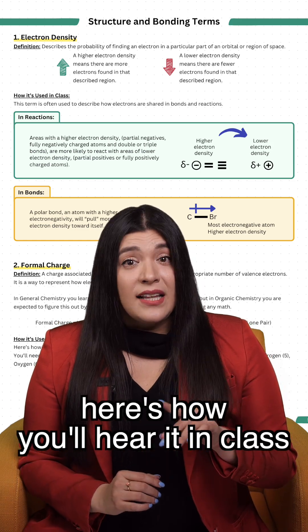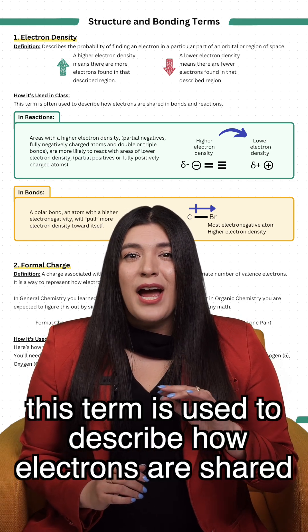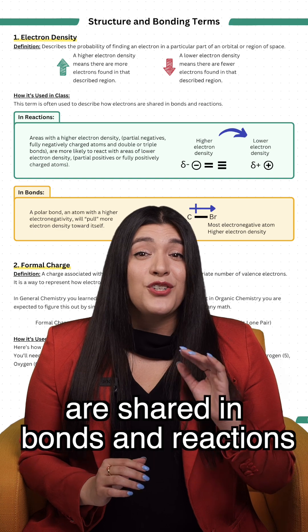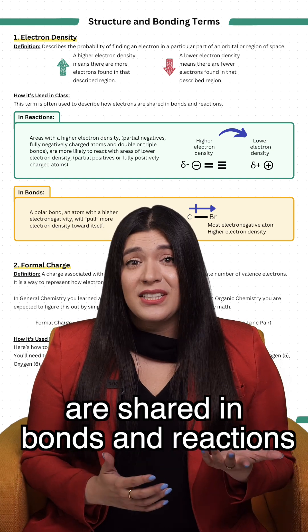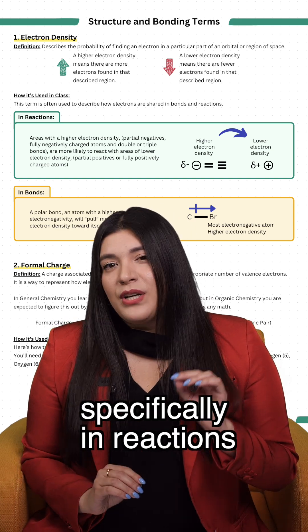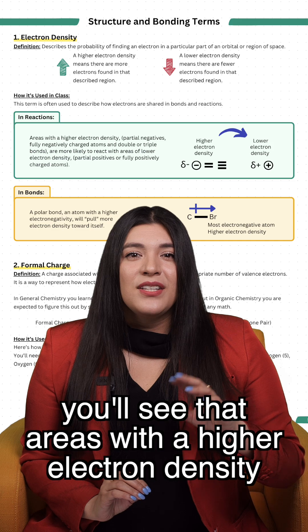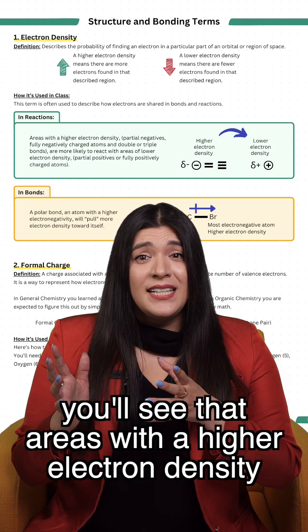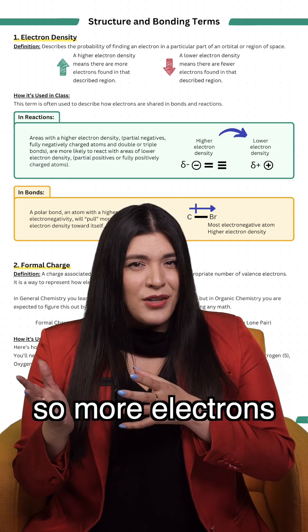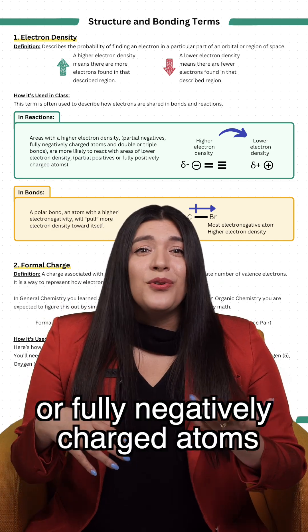Here's how you'll hear it in class. This term is used to describe how electrons are shared in bonds and reactions. Specifically in reactions, you'll see that areas with a higher electron density — so more electrons, like partial negatives or fully